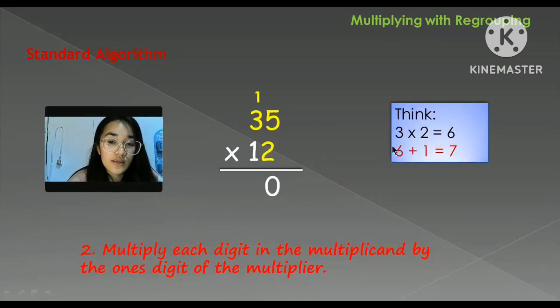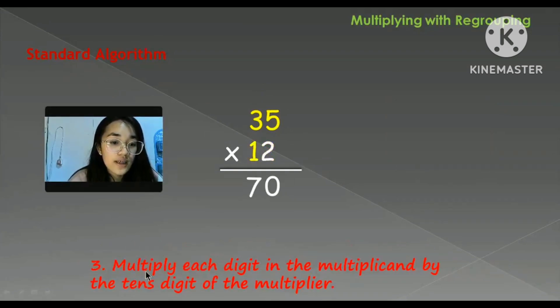So 3 times 2 is equal to 6, and 6 plus 1 is 7. Next one, multiply each digit in the multiplicand, which is again the 35, by the tenth digit of the multiplier, which is 1.